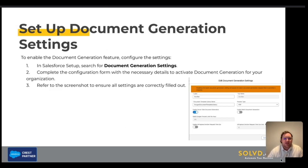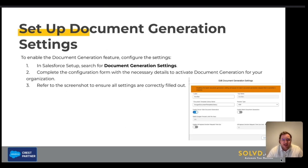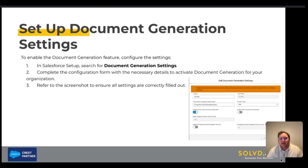Next, we will need to configure the settings for document generation. In Salesforce Setup, search for Document Generation Settings and complete the configuration form with the necessary details to activate document generation for your organization. You can use the screenshot provided to make sure it is set up correctly.